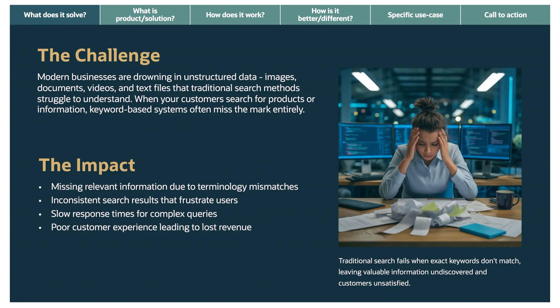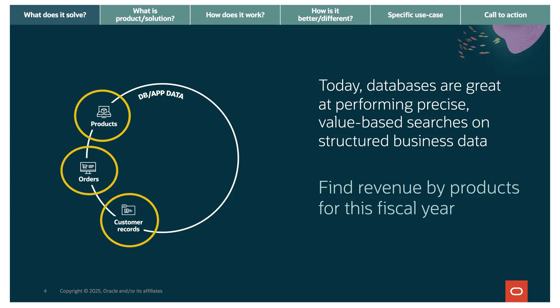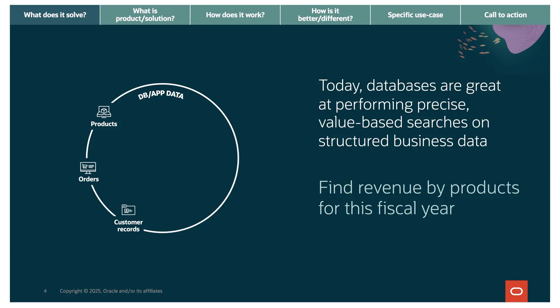To understand why this is such a problem, let's look at what databases do really well. Oracle Database handles precise value-based searches on structured business data phenomenally. This circle shows products, orders, customer records — your transactional data. When you need revenue by product for this fiscal year, the database handles it beautifully. Why does this work? Because data is structured, with defined fields and data types. Queries are precise — you know what you're looking for. It's value-based, matching exact values in the fields.